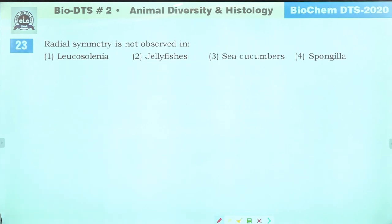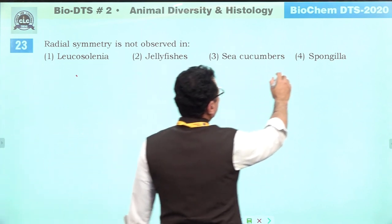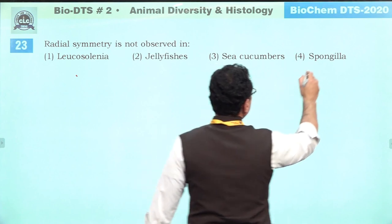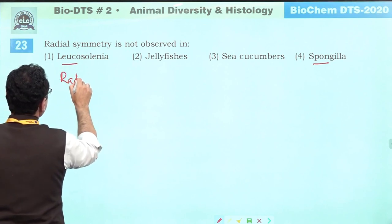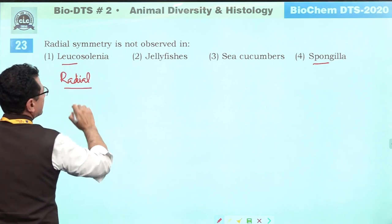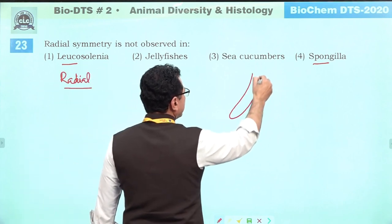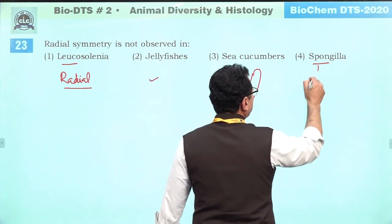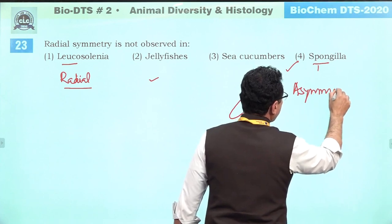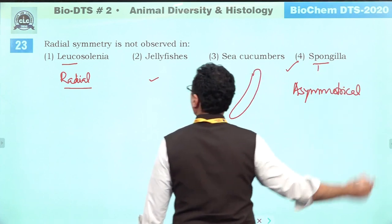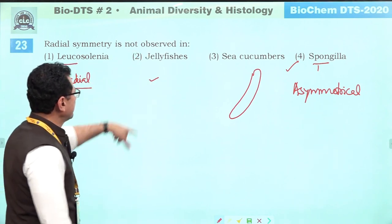Radial symmetry is not observed in Spongilla. Leucosolenia is a sponge — it has radial symmetry. Jellyfish is always radial. Sea cucumber is also radial. Spongilla is asymmetrical. So radial symmetry is not observed in Spongilla. Fourth answer.